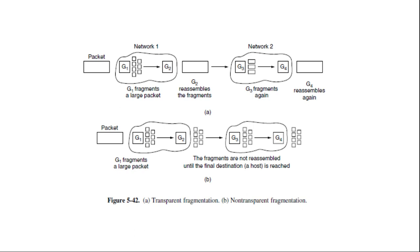Transparent fragmentation is straightforward but has some problems. For one thing, the exit router must know when it has received all the pieces, so either a count field or an end of packet bit must be provided. Also, because all packets must exit via the same router so they can be reassembled, the routers are constrained. By not allowing some fragments to follow one route to the ultimate destination and other fragments a disjoint route, some performance may be lost. More significant is the amount of work that the router may have to do. It may need to buffer the fragments as they arrive and decide when to throw them away if not all fragments arrive. Some of the work may be wasteful.